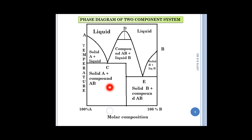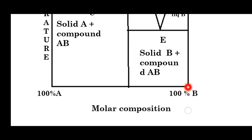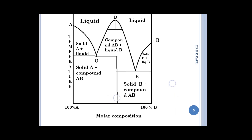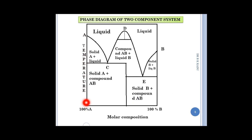In this diagram, the x-axis shows the molar composition in percentage. At one end is 100% molar composition of A, and at the other end the molar composition of B is 100%. On the y-axis there is the temperature parameter. As temperature changes, solid A and solid B compounds change through various phases shown in this diagram.